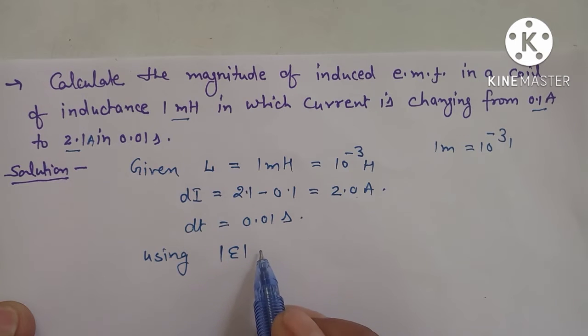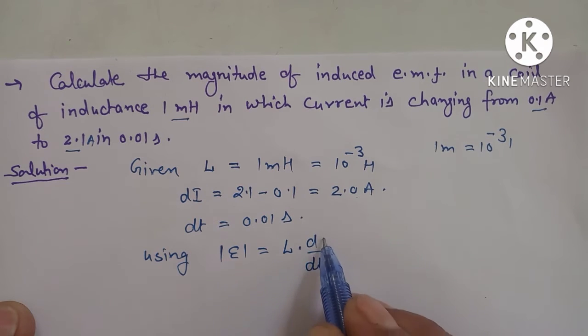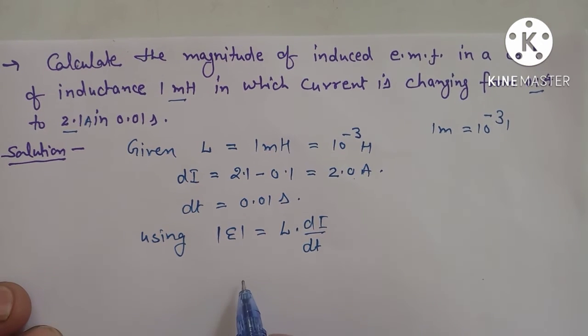The magnitude of induced EMF equals inductance multiplied by the time rate of change of current, that is E equals L dI by dt.